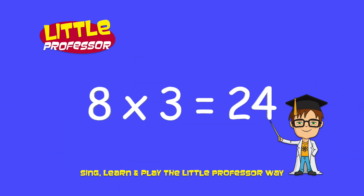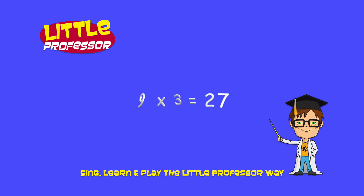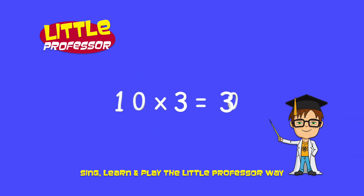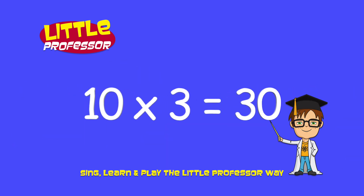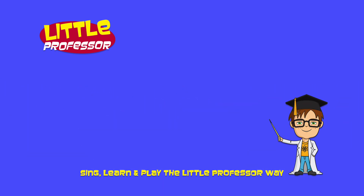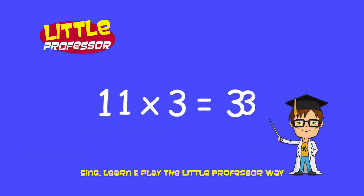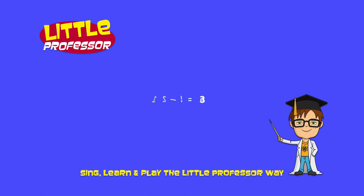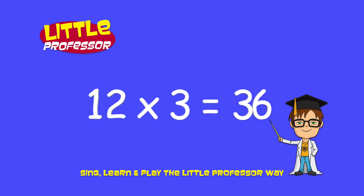Ten times three is thirty. Eleven times three is thirty-three. Twelve times three is thirty-six.